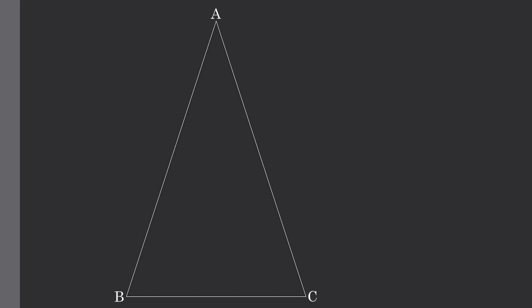Now let's look at our triangle ABC. We want to draw line segment BD, which is the angle bisector of angle B. We'll also do the same thing to angle C, making CE equal to BD. Now we'll label our angles appropriately: labeling angle 1 and angle 1, which are equal because of our angle bisector, and angle 2 and angle 2 for the same reason.